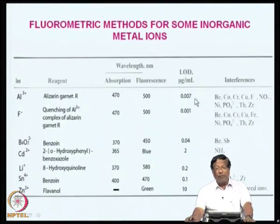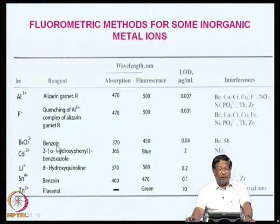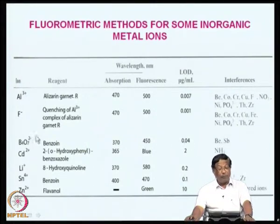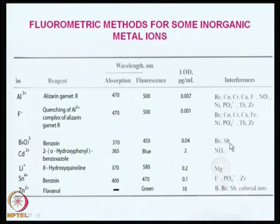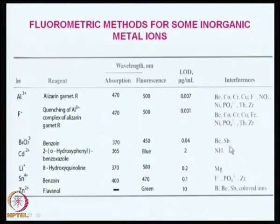These limits are much better than absorption methods, though there will always be some interferences. For example, borate reacts with benzoin to produce fluorescence around 450 nm with a limit of detection of approximately 0.04, with only beryllium and antimony interfering. Cadmium can be determined using 2-(o-hydroxyphenyl)benzoxazole, giving blue fluorescence with excitation at 365 nm and a limit of detection of 0.2 microgram per milliliter, with only ammonia interfering. There are also methods for lithium with 8-hydroxyquinoline, tin with benzoin, and zinc with flavonol.